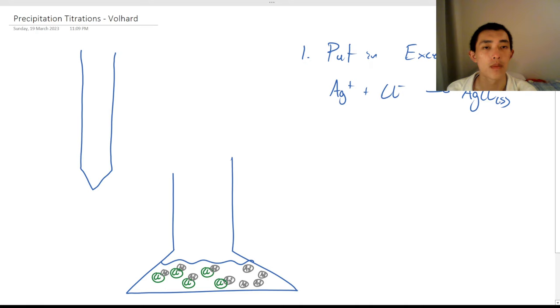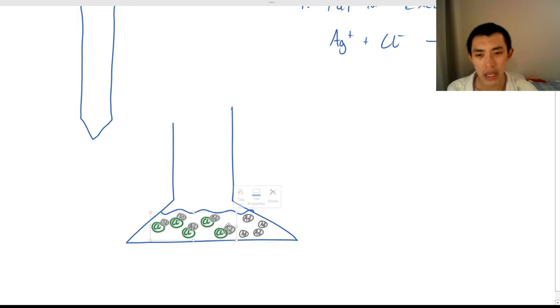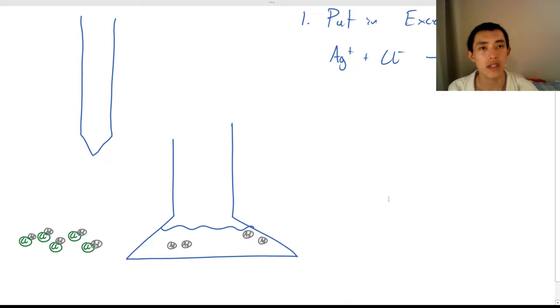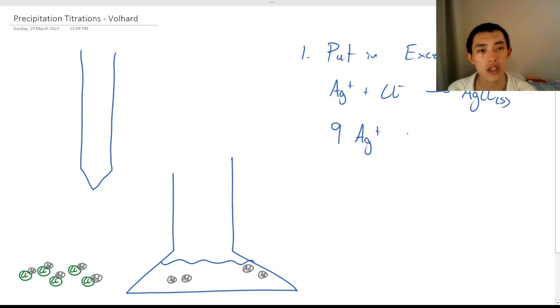If we put in excess amounts of silver nitrate, that means we're going to have our silver chloride. And you can imagine that we can filter it out, or we can just pretend that it no longer exists. It wouldn't really interfere with the rest of our experiment. So we had 9 silver atoms initially, now we have 4.